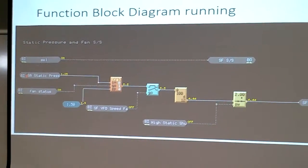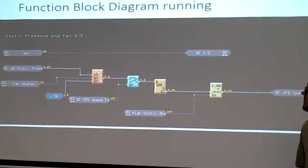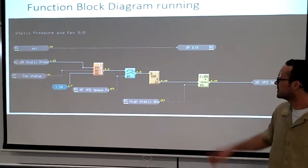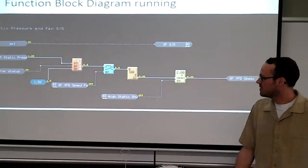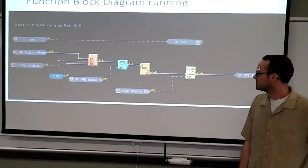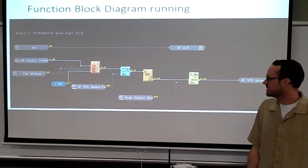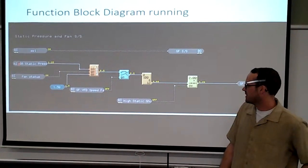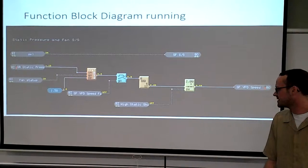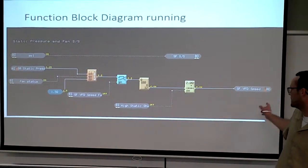This is our function block diagram and this is in the running mode. You can see that our switch is on to our start stop. We have a static pressure, band status, we have a set point, VFD fault which is off, high static shutdown which is off, and our VFD speed.